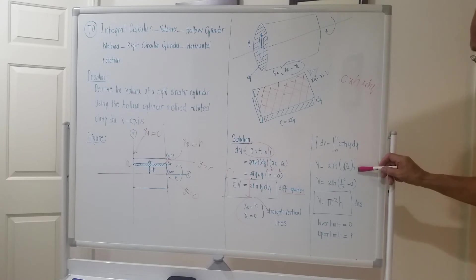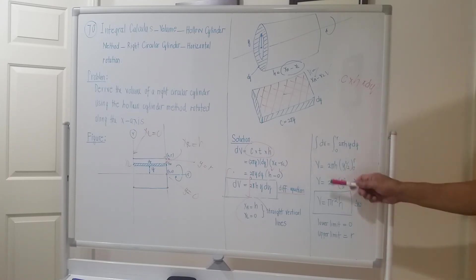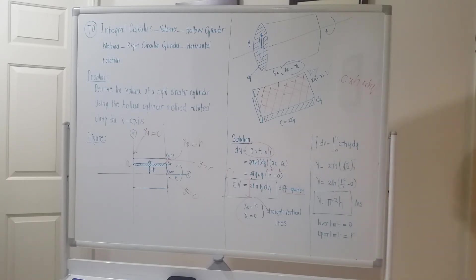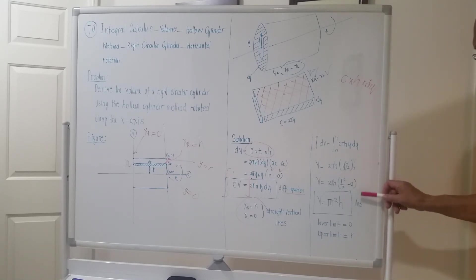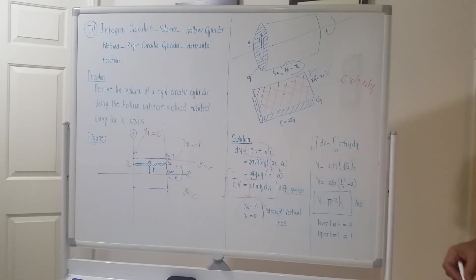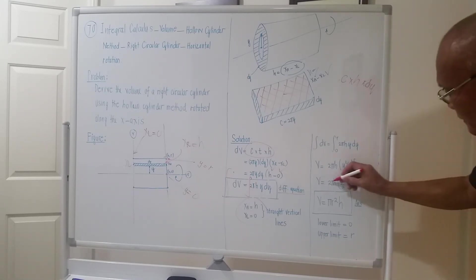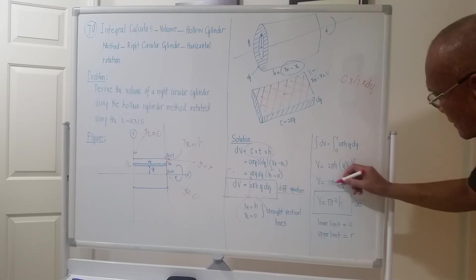The volume is 2πh times [r²/2 minus 0]. The 2 in the denominator cancels with the 2 in front, giving the volume of the right circular cylinder.